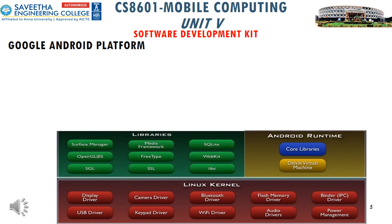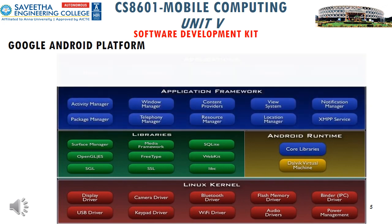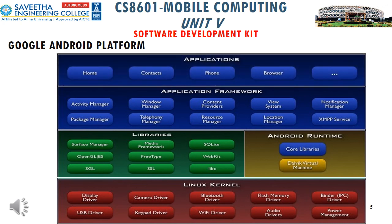The library layer includes a set of C and C++ libraries exposed to developers through the Android application framework. They include media libraries, system C libraries, surface manager, 3D libraries, SQLite, and others. The application framework layer provides an access layer to the framework APIs used by the core applications and allows components to be used by developers. On top of all these layers comes the applications layer, containing the apps we use on our mobile phones such as contacts and browser.